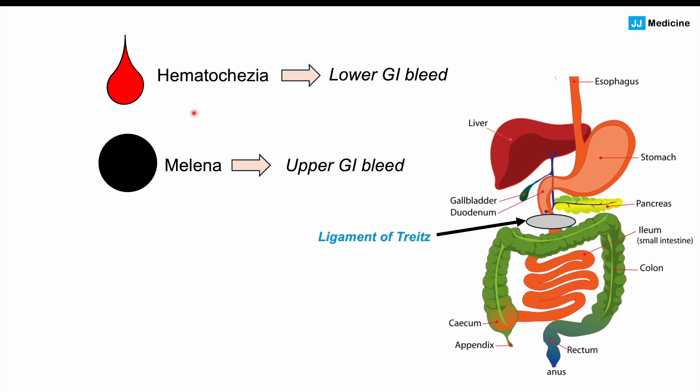These are not hard and fast rules. Hematochezia can occur from an upper GI bleed if the bleeding is very brisk — for instance from the upper duodenum — and the blood passes too quickly to be digested. Most commonly, angiodysplasia causes a lower GI bleed from the cecum, but upper GI bleeds from angiodysplasia do occur in some cases.